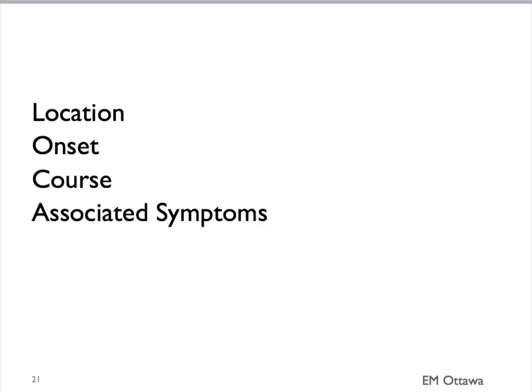In summary, we discussed the approach to history in patients with abdominal pain. We can divide it into location, how the pain started, what is the course of the pain, and any other associated symptoms. In part 2, we'll discuss how to use our physical examination to narrow down the diagnosis. We hope you find this helpful. Thank you for watching.